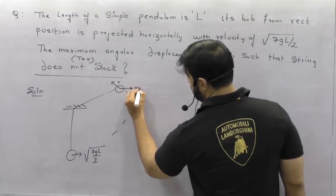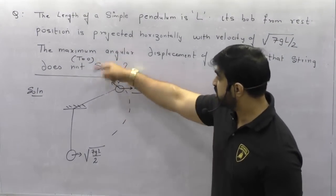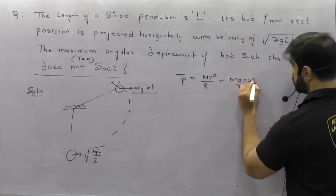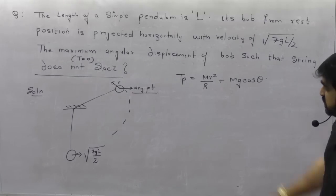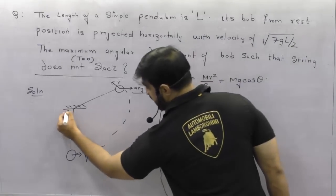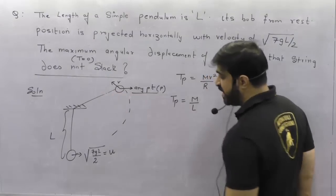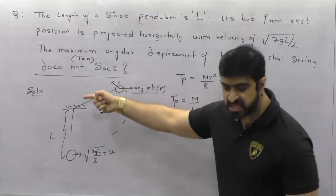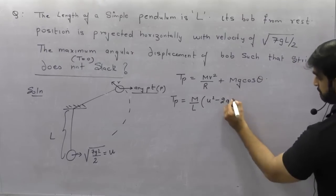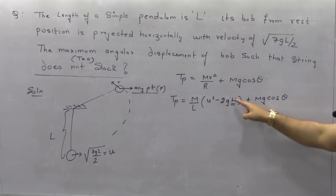At any point P where tension is 0: T_P = (m/L)(V²) + mg·cosθ = 0. Velocity at point P: V² = U² − 2gH, where H = L(1 − cosθ). So T_P = (m/L)[U² − 2gL(1 − cosθ)] + mg·cosθ. Substituting U² = 7gL/2 and setting T_P = 0.